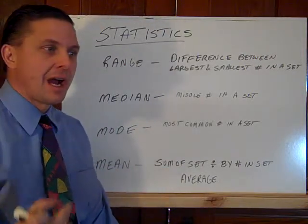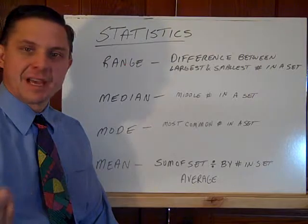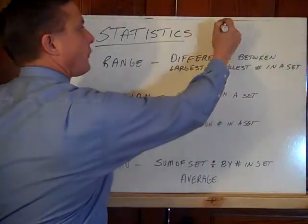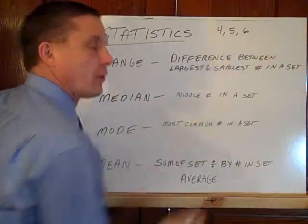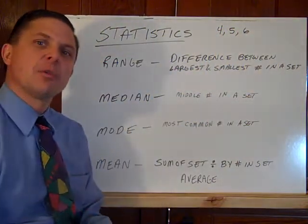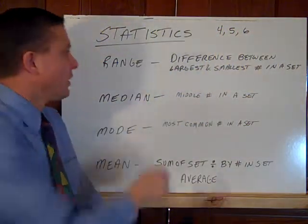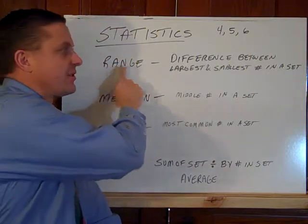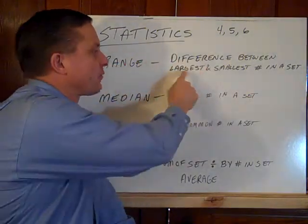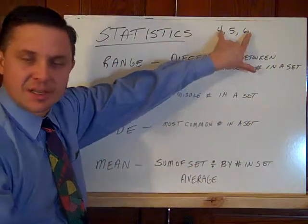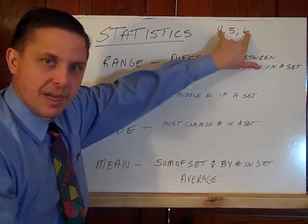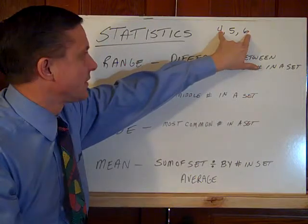You can be given a set of numbers. I could tell you that I'm looking at some packages to ship - one weighs four pounds, one weighs five pounds, one weighs six pounds. Three packages. There's a number of ways to talk about those packages. The first is the range of those packages, the difference between the largest and the smallest in the set. The range of this set is two pounds. My heaviest is six, my lightest is four.